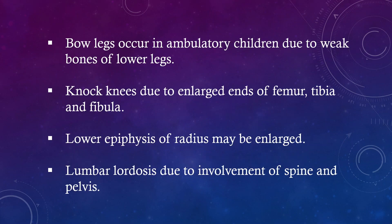Bow legs occur in ambulatory children due to weak bones of the lower legs. Knock knees due to enlarged ends of femur, tibia, and fibula. Lower epiphysis of radius may be enlarged. Lumbar lordosis due to involvement of spine and pelvis.